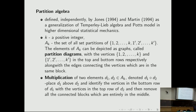K is a positive integer and A_K is the set of all set partitions of {1,...,K} and {1',...,K'}. The elements of A_K can be depicted as graphs with the top row having vertices 1 to K and the bottom row having 1' to K'. Two vertices are joined if they are in the same block of the partition, and not joined if they are in different blocks.